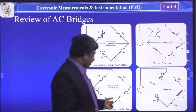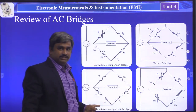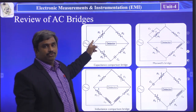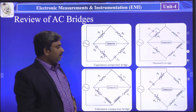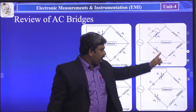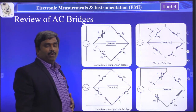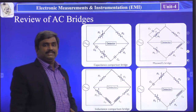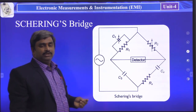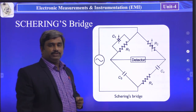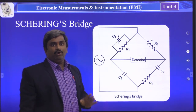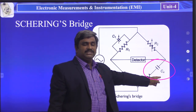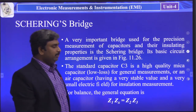These three bridges — Maxwell's, Hays, and one more — are used for measuring the unknown inductance value. Only the capacitance comparison bridge was used for measuring the unknown capacitance value. Coming to the Schering Bridge, this bridge is used for measuring unknown capacitance values — that is, we have to measure the unknown CX value.